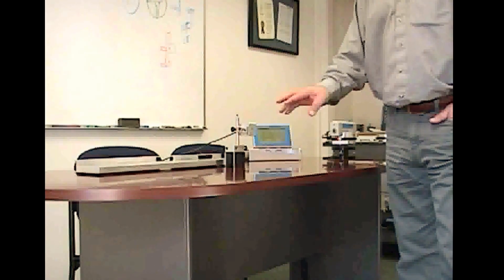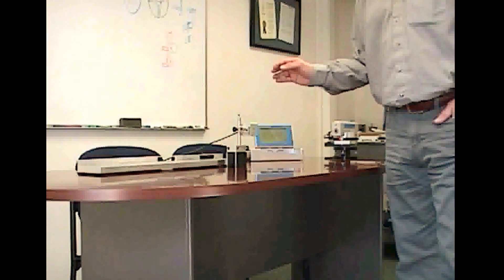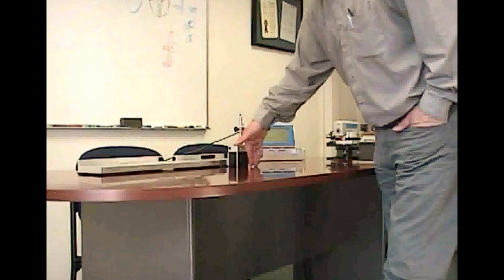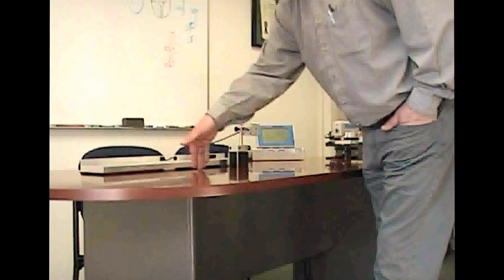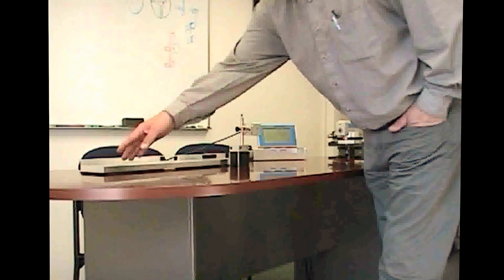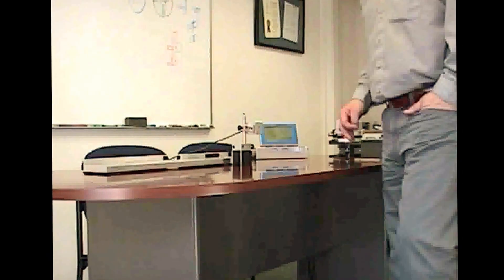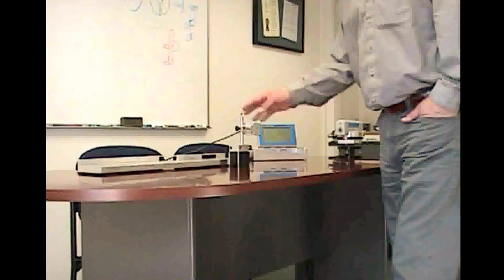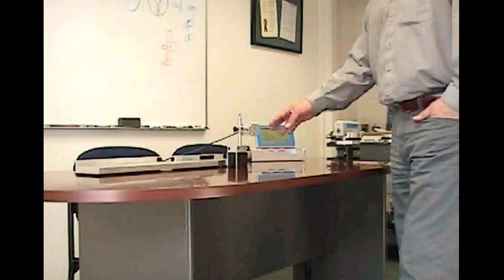What that is going to tell me is now I have a straight line that's running down parallel to the surface that I'm trying to measure. Once I've got those two points equal, what I can do is set my display unit to zero.